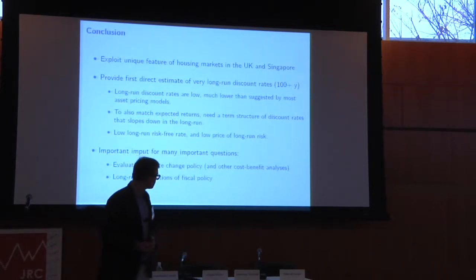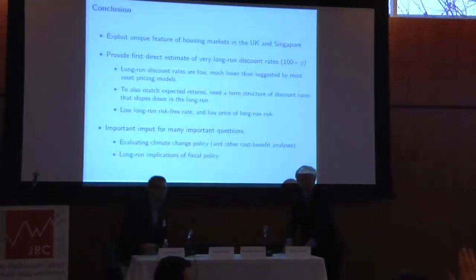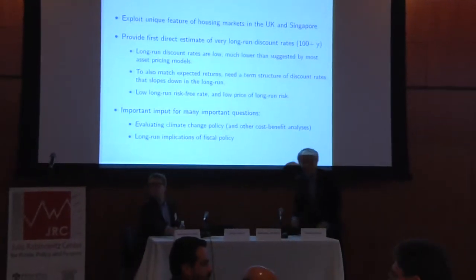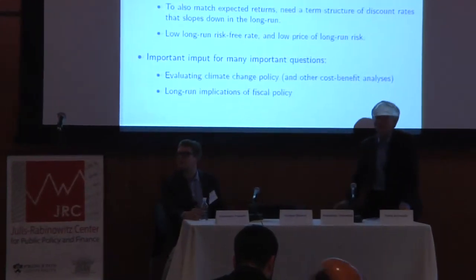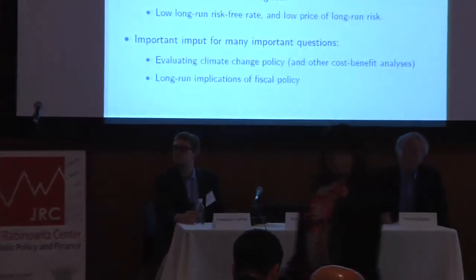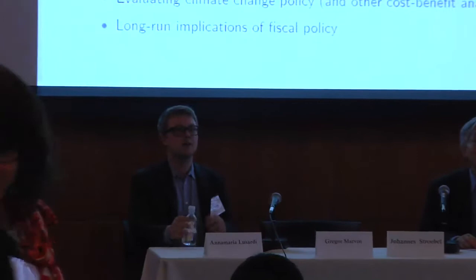Thank you. [Audience question]: The long-run discount rate is about 1.5%. I was wondering whether you could present it also as a forward rate curve — it would be better to digest. Generally you could generate any such curve if you have the right mean reversion in GDP growth rate.